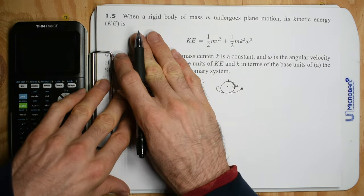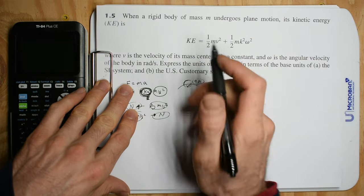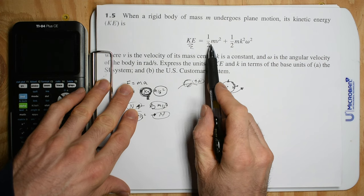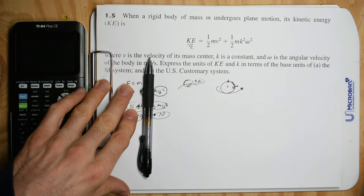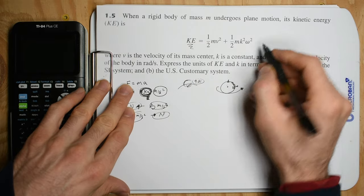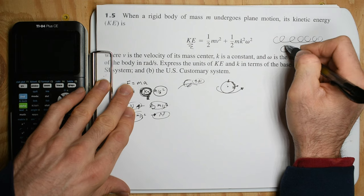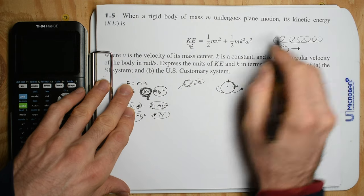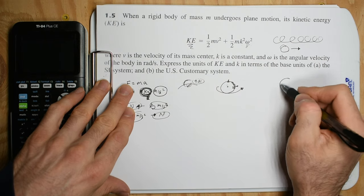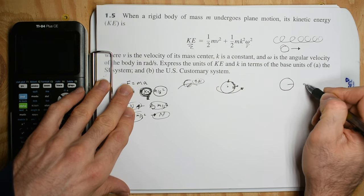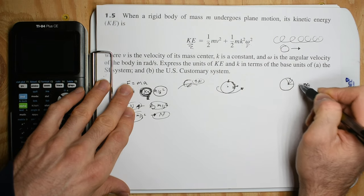So it wants to know: when a rigid body of mass M undergoes plane motion, its kinetic energy is one half mv squared — that's motion just linearly. And then it might also be rotating while it does it, so something is rotating but also translating. Here's its rotational component — this is your radians, which is essentially degrees of rotation per second.